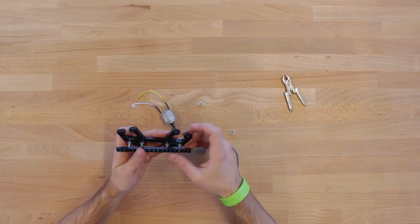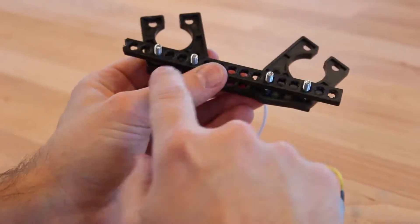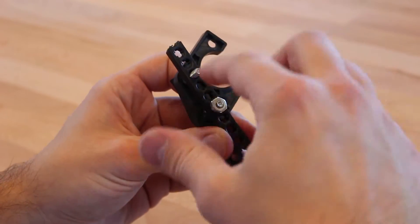Then slip a 17-hole plate over the screws so that you have two holes on the outside of each screw. Secure this in place with two nuts.